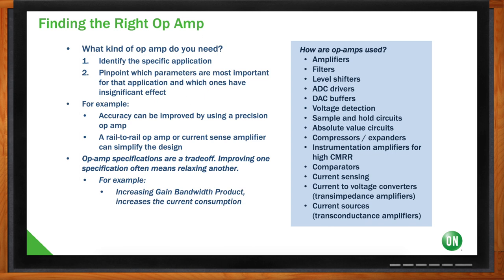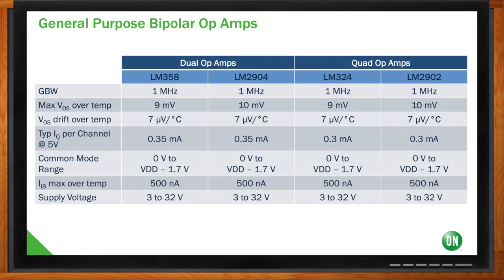Let's start with your garden variety general purpose op amps that we've all probably used since engineering school. A lot of those, like the LM358s and the 324s, do really well in a wide variety of applications. They're good for basic amplification or buffer circuits, and they are quite popular. My question is: if that kind of op amp has worked for us for decades, why do we want something different?